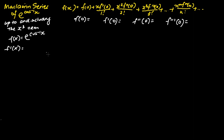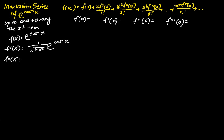Next, we will find f'(x), which is differentiating e to the power cosine inverse x one time. We differentiate cosine inverse x, which gives the negative of 1 over the square root of 1 minus x squared, multiplied by e to the power cosine inverse x.